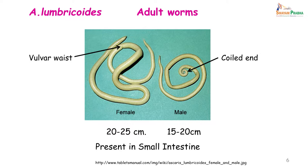Let us look at the morphology of the Ascaris lumbricoides adult worm. The female is longer than the male, about 20 to 25 centimeters in length; in fact it looks like an earthworm. Very often you will have a patient coming to you saying he passed something which looked like an earthworm in the stool. The female also has a distinct vulvar waist. The male on the other hand is about 15 to 20 centimeters in length, smaller than the female, and has a coiled posterior end.